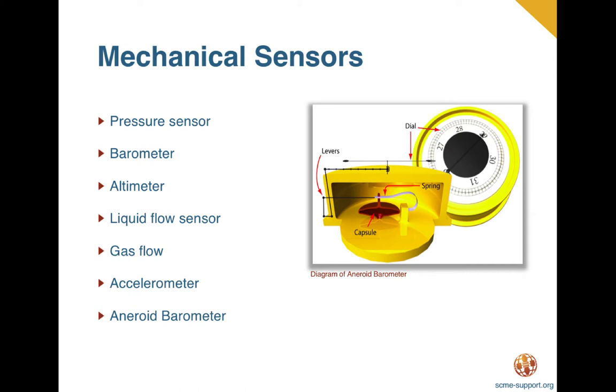Other types of mechanical sensors include the pressure sensor which measures pressure, barometers which measure atmospheric pressure, and altimeters which measure the altitude of an object above a fixed level. Other sensors include liquid flow sensors which measure flow rates of liquids, gas flow sensors which measure velocity, direction, and the flow rate of a gas, and accelerometers which measure acceleration and deceleration.